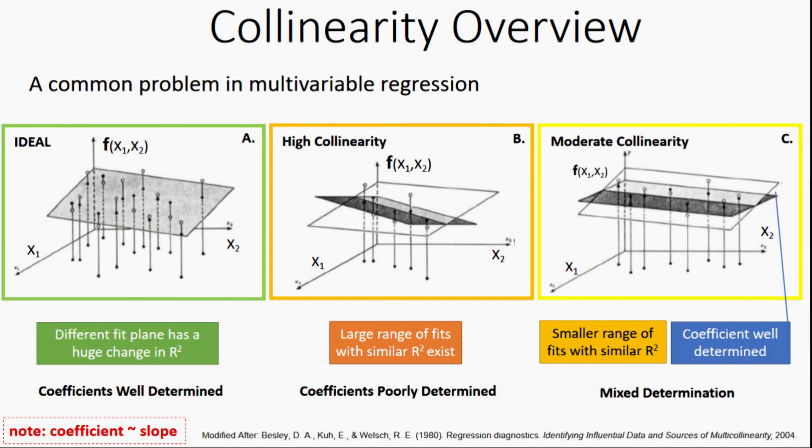A common problem in multivariable regression is collinearity. In the ideal case that we see here, a different fit plane has a large impact on the R squared. In that case, the coefficients are well determined. We can't really move that plane around much. If we look at case B, the case of high collinearity, what we see is there's a range of planes that we could fit in there, and our coefficients are poorly determined.